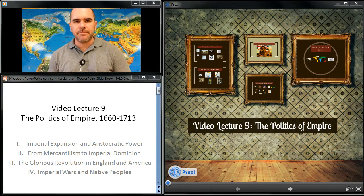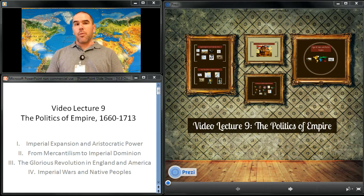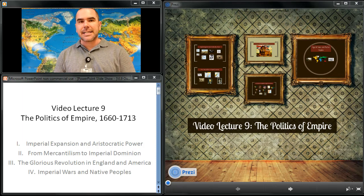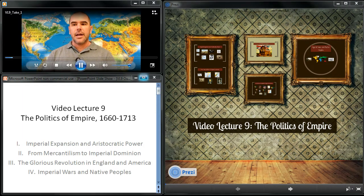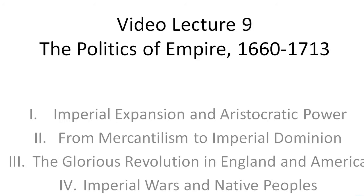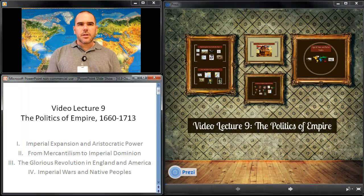This is video lecture number nine. This is Mr. Weber, Festus High School. Welcome. Today we are going to talk about the politics of empire spanning the years from 1660 to 1713. Four sections today: imperial expansion and aristocratic power, from mercantilism to imperial dominion, the Glorious Revolution in England and America, and finally, imperial wars and native peoples.